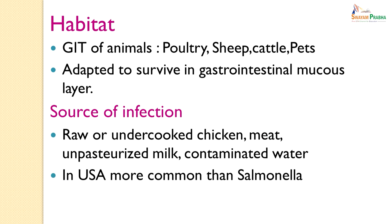The normal habitat of Campylobacter is the gastrointestinal tract of animals — poultry, sheep, cattle and pets. It is adapted to survive in the gastrointestinal mucosal layer of the intestine. Source of infection is usually eating raw or undercooked chicken, meat, pasteurized milk and contaminated water. The most common source is eating undercooked chicken. In the US, it is a more common cause of diarrhoeogenic diseases than Salmonella.